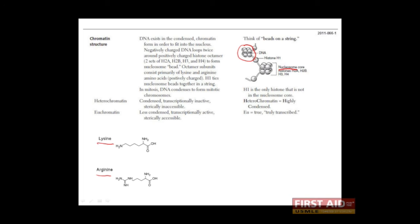When DNA is tightly bound to histones, it's condensed and it's known as heterochromatin. When it's loosely associated, it's called euchromatin. You can remember this with the mnemonic: heterochromatin is highly condensed, and euchromatin, u rhyming with true, truly transcribed.